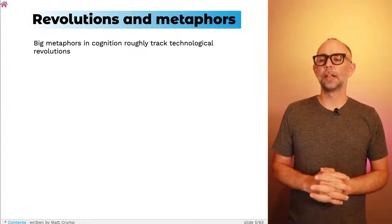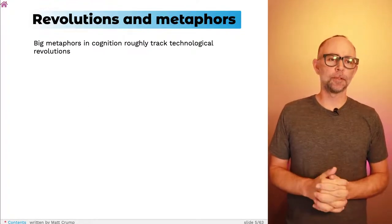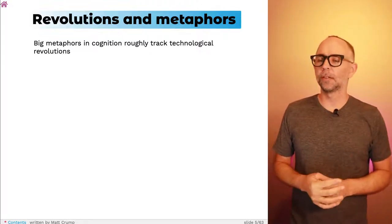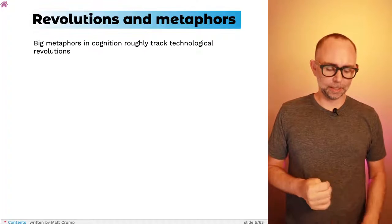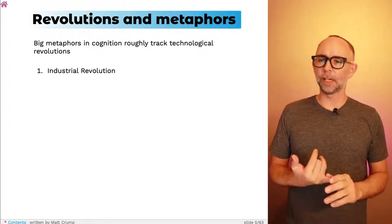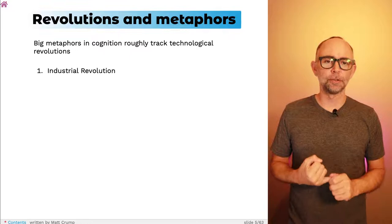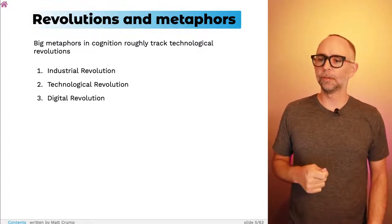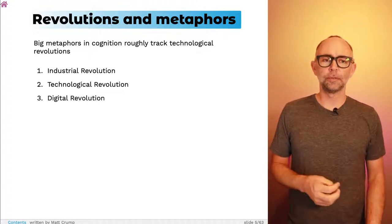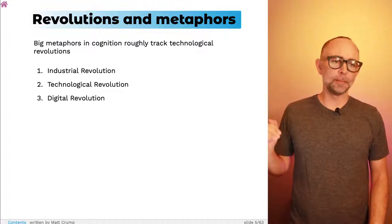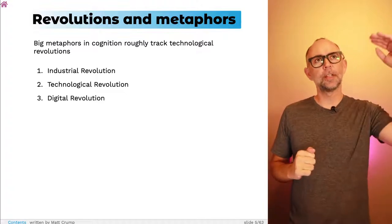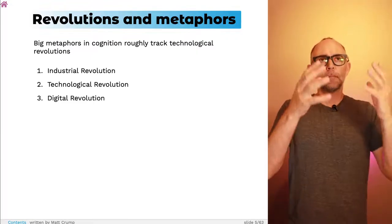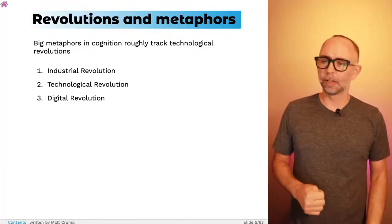In the textbook, I claim that big metaphors used in cognitive psychology roughly track technological revolutions in society. If we look at some of these technological revolutions — the industrial revolution, the technological revolution, and the digital revolution — we'll also see that explanations about how cognition works tend to adopt metaphors about technology at the time.